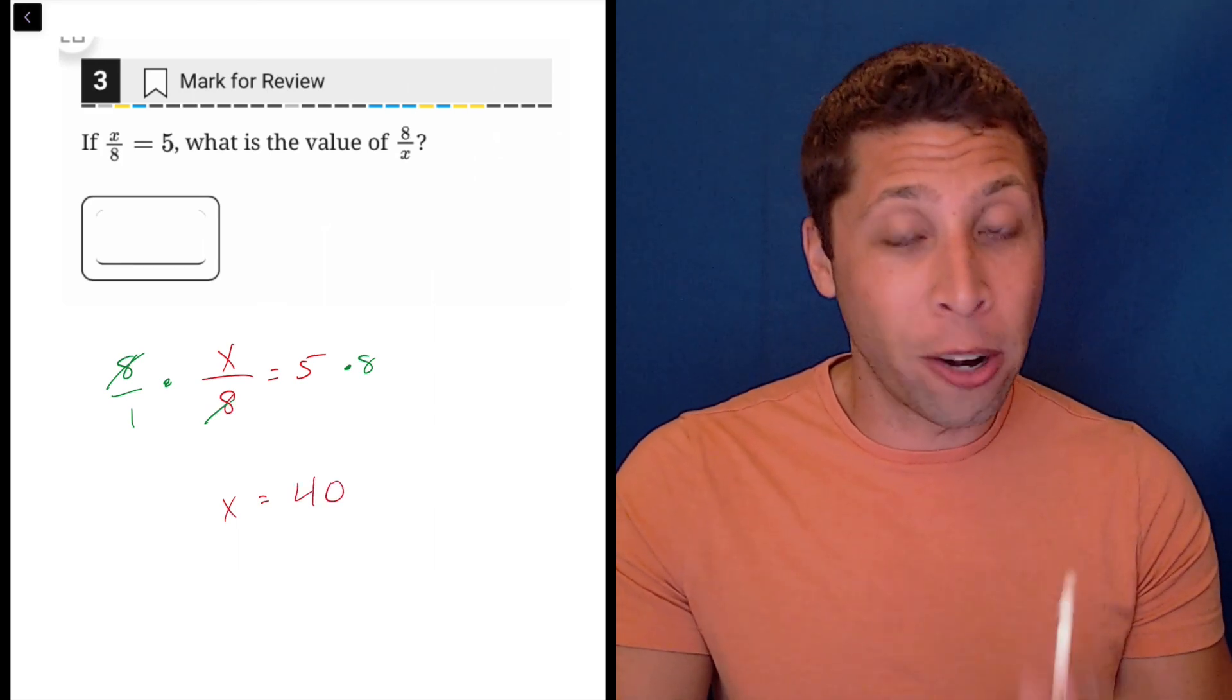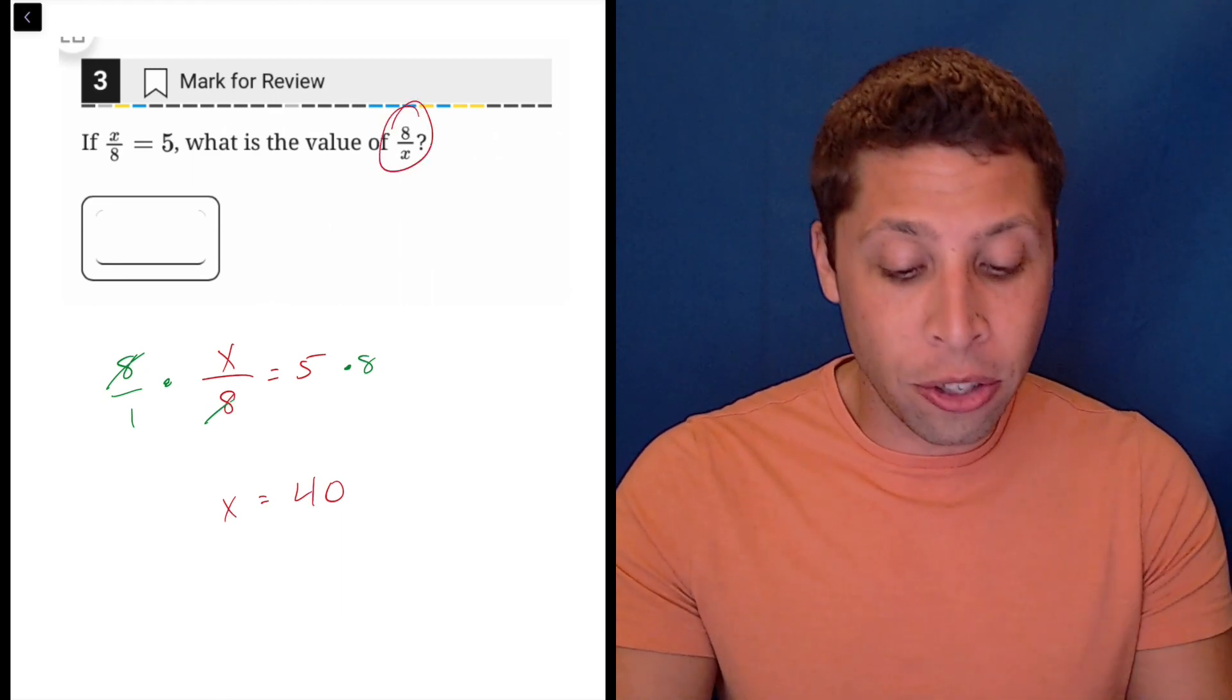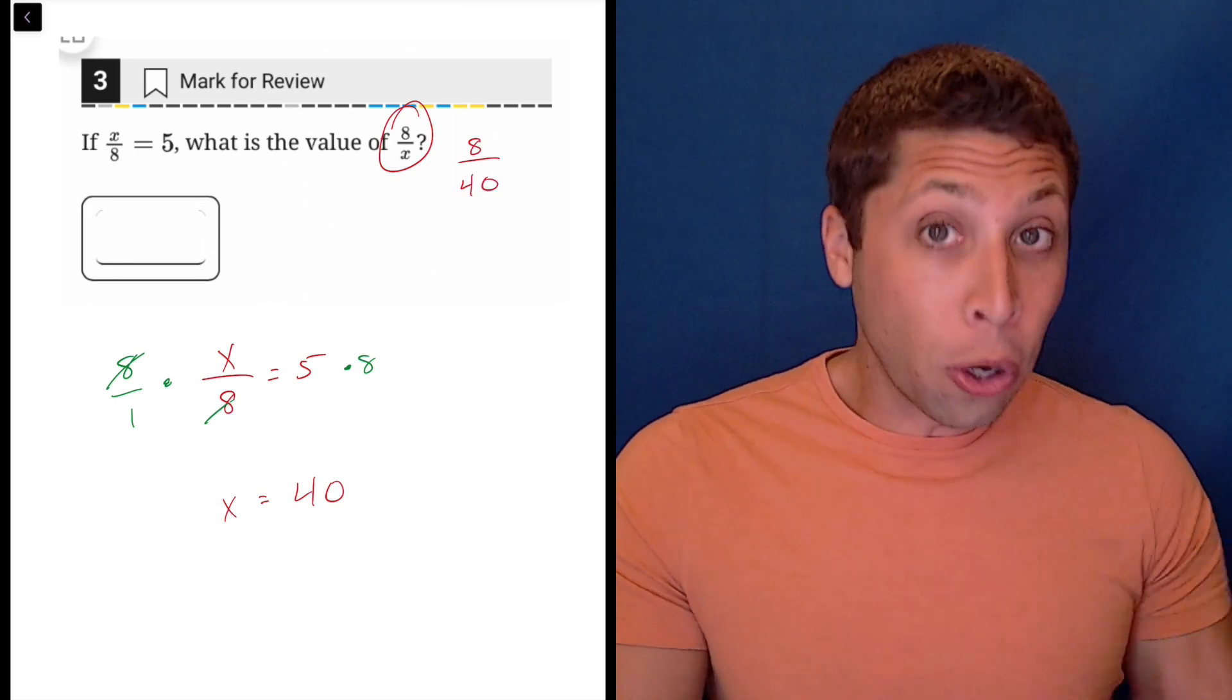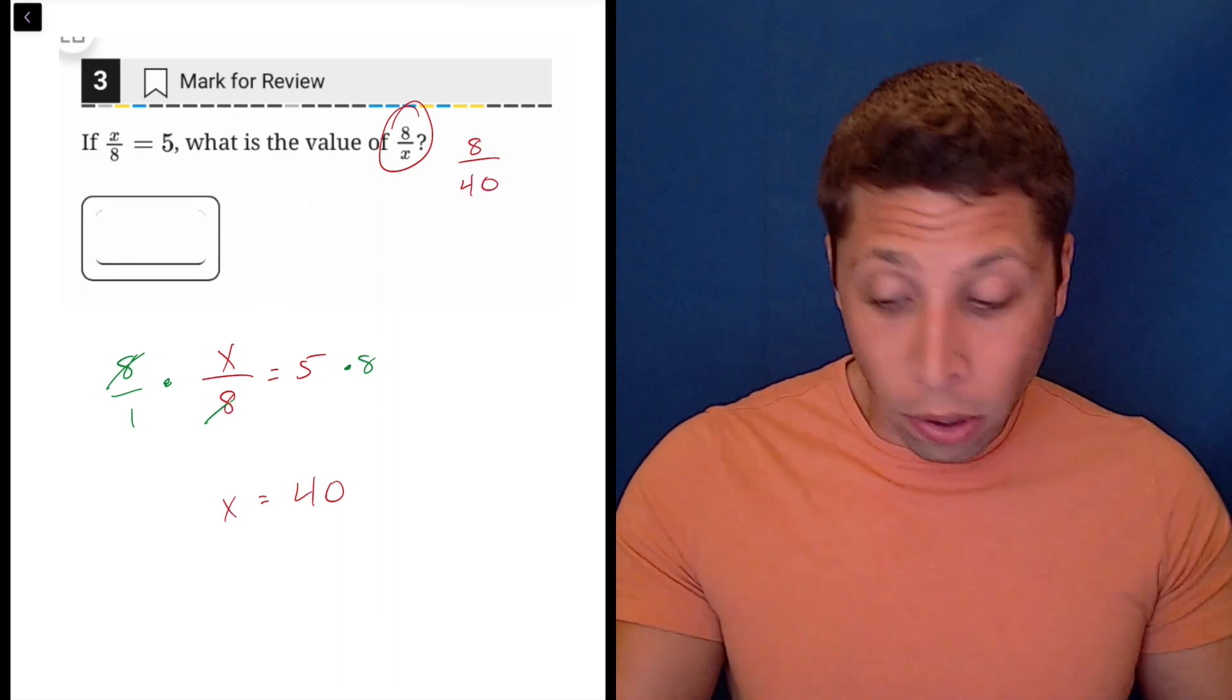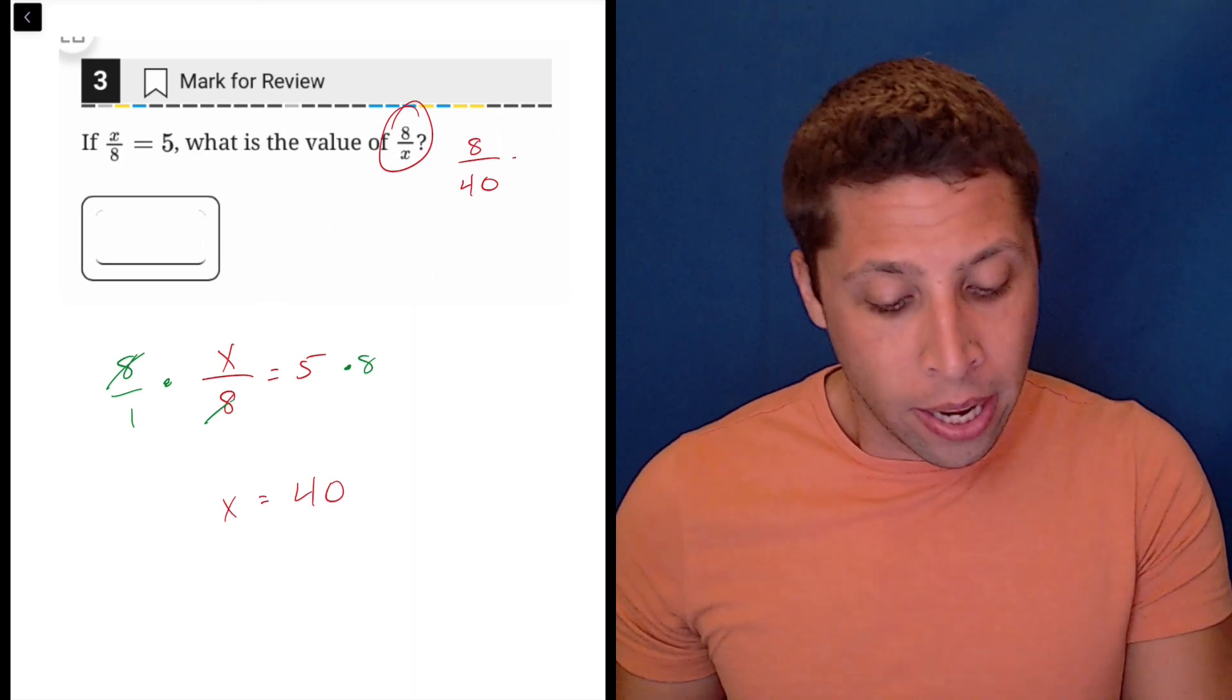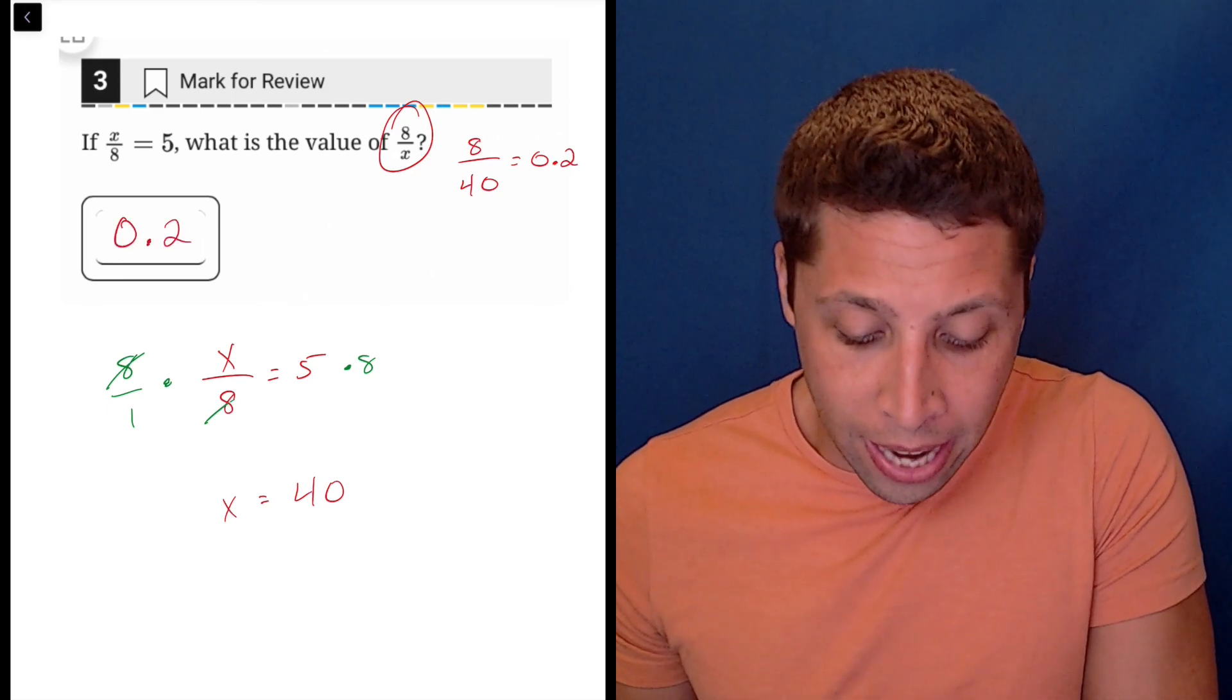Now don't bubble that though. They don't want X. They want eight over X. So we do need to do this last step of just figuring out what that is. You could bubble it or you can put it in your calculator and just turn it into something simpler. Eight divided by 40 is 0.2 and that is the answer.